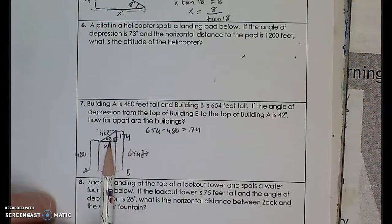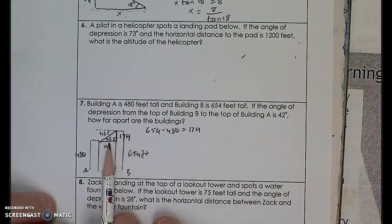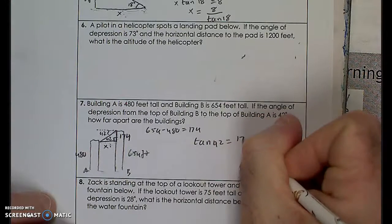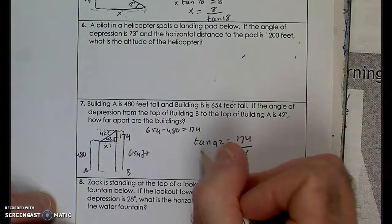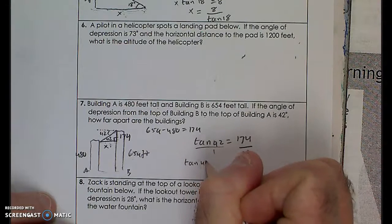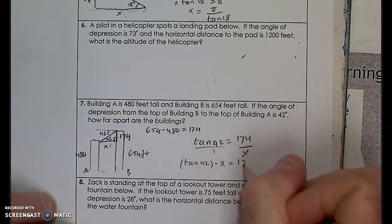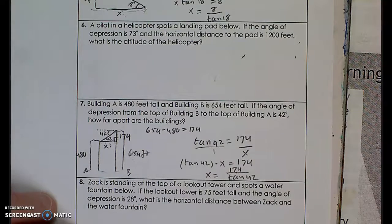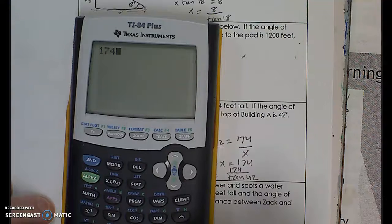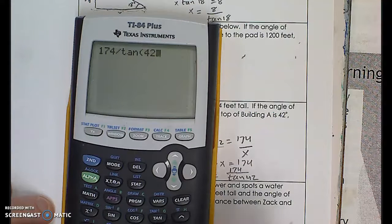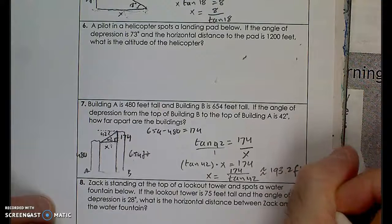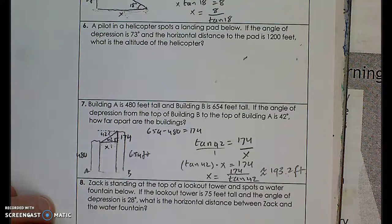So that side is 174 feet — I have a right triangle. For this angle of reference, the opposite side is 174 and the adjacent side is x. Using the tangent function: tangent of 42 equals 174 over x. Cross-multiplying: tangent of 42 times x equals 174, so x equals 174 divided by tangent of 42. Using the calculator, that gives approximately 193.2 feet — the distance between the two buildings.